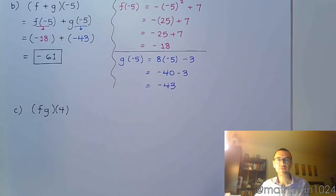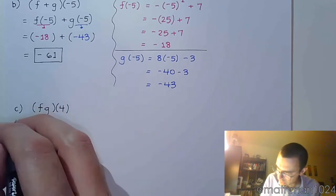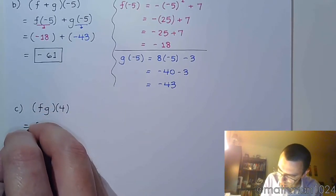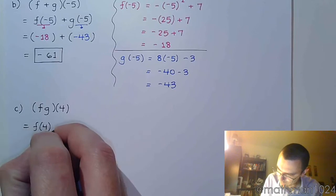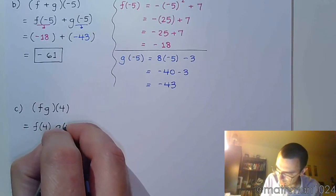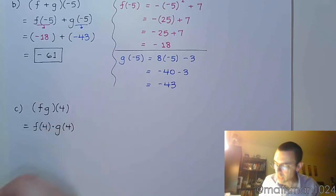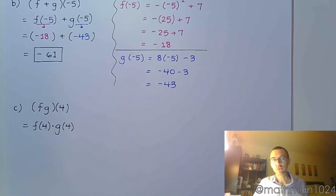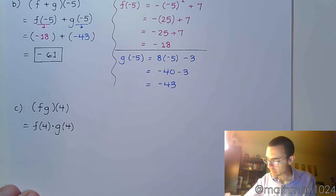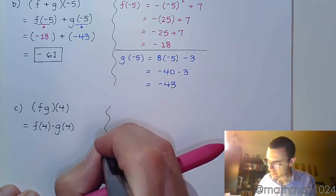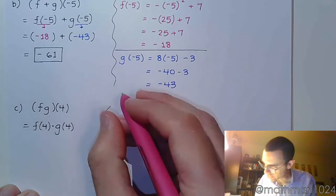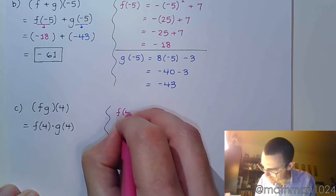And let's look at the last one here. If I have fg of 4, that means in this problem, you're going to find f of 4, you're going to find g of 4, and you're going to multiply those two results. So, off to the side, let's work this out.